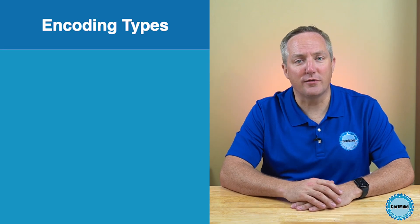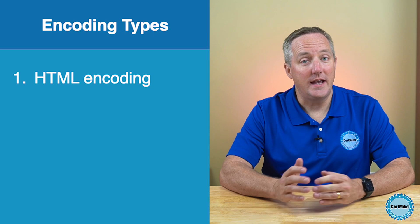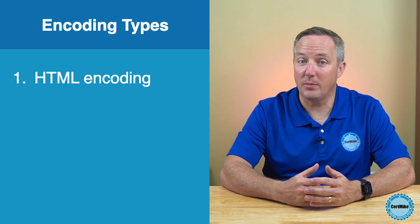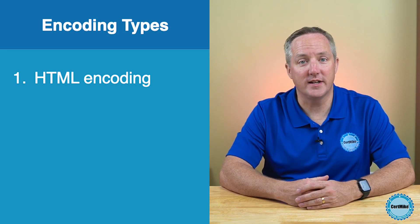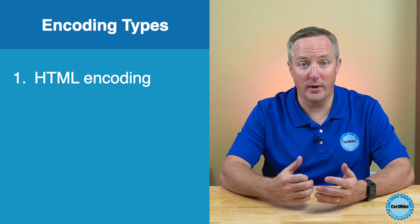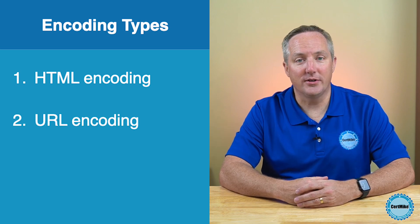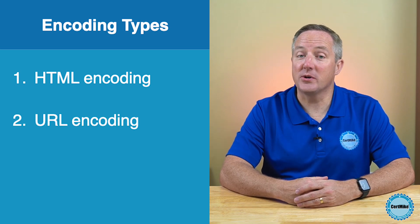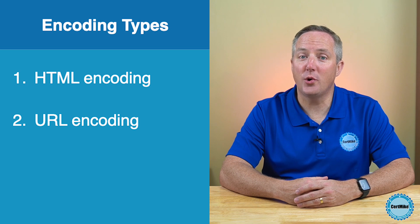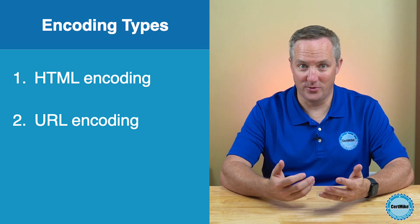We often use two different types of output encoding. HTML encoding uses an ampersand notation, and it's used for encoding values in an HTML document, like a web page. URL encoding uses a percent sign notation, and it's used for encoding values in a web address, or URL.